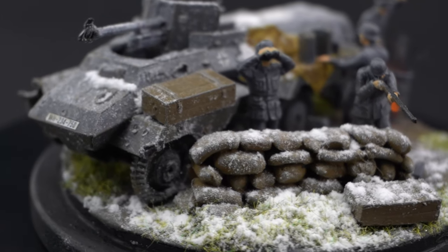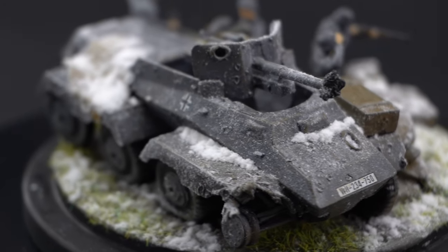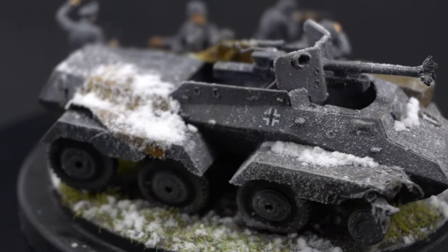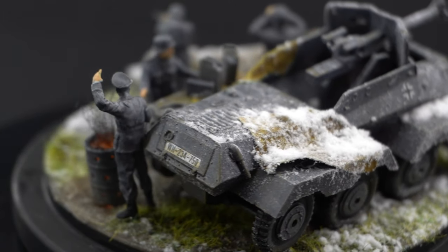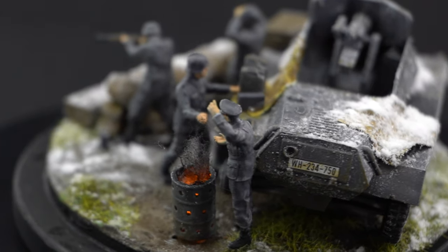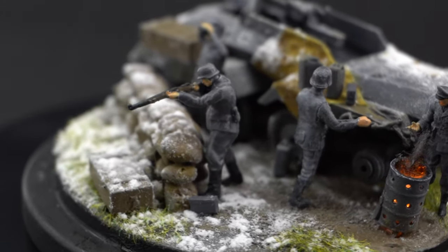They're using this very damaged and neglected armoured car as cover and have fortified it in some way to try and give themselves a little bit of cover. However, they have been caught off guard by the weather and they weren't quite prepared for it, and have very hastily set up this brazier to try and keep themselves warm.